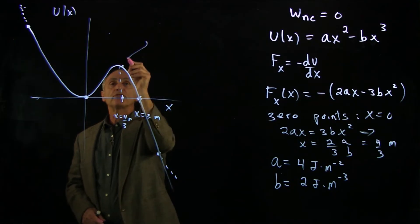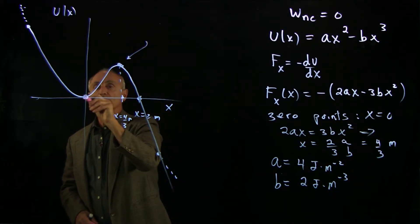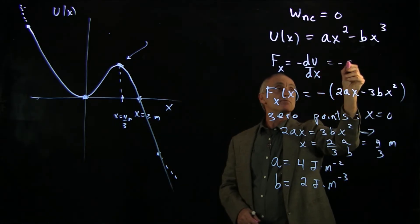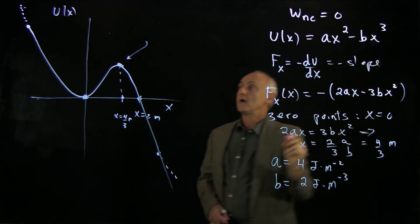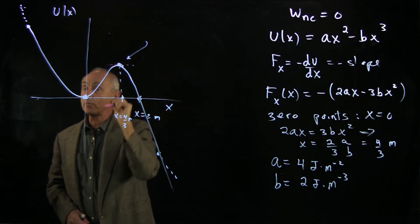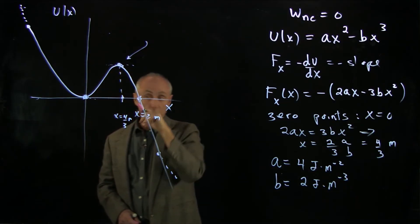Let's focus on these two points right here, where our force is 0. Remember that the force is minus the slope. So we can see immediately that these two points have zero slope, and the force is 0 there.